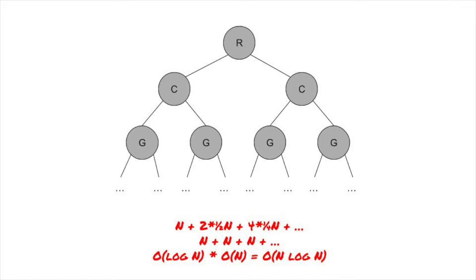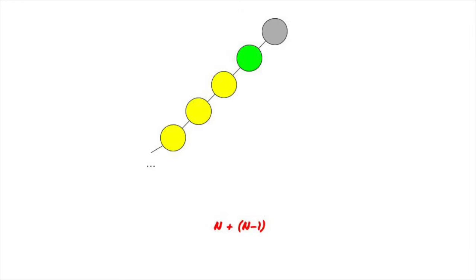For an unbalanced tree, this approaches O of n squared in the worst case. For a tree like this, you check n elements for the root, then n minus 1 elements for the next child, then n minus 2 and so on, which is O of n squared. Can we do better?